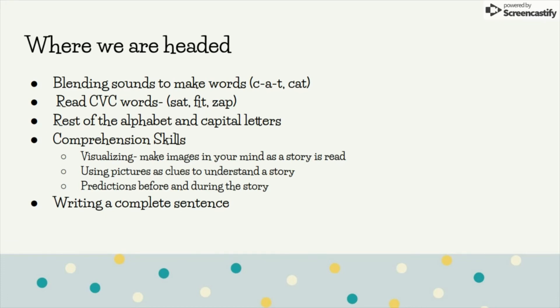We'll also cover the rest of the alphabet and the capital letters. We're going to be working on comprehension skills such as visualizing and making predictions. Visualizing is when, as you read a story, you're making a mental image and that helps you to understand the story. Also looking at the pictures the story provides, using those as clues to understand what might be happening. Making predictions before the story happens — looking at the front cover, asking what do you think is going to happen, and then pausing in the middle of the story so the student can predict what might happen next.